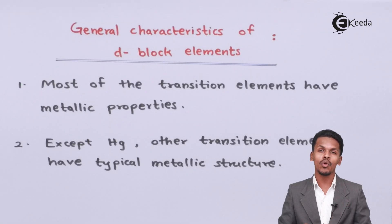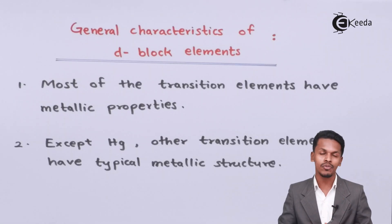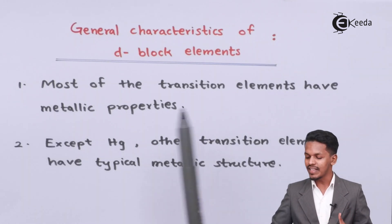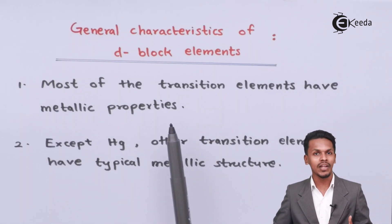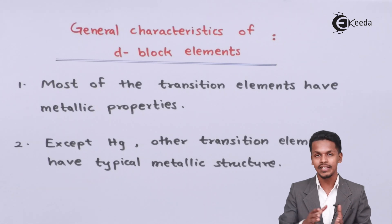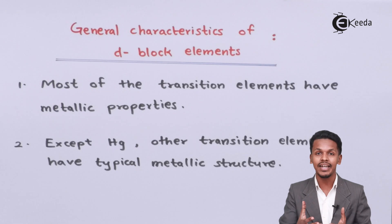In this topic I am going to talk about the important general characteristics of the D-block elements. Starting with the first one: most of the transitional elements have metallic properties — they are basically metals. That is the reason they have metallic properties like ductility, malleability, and so on.